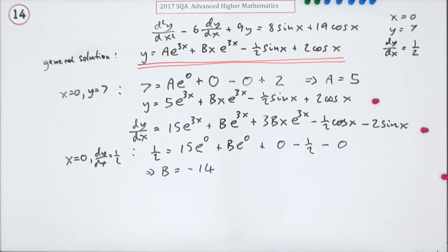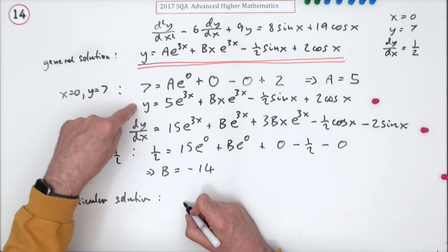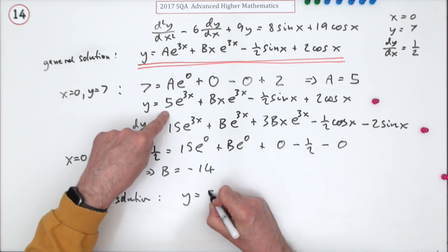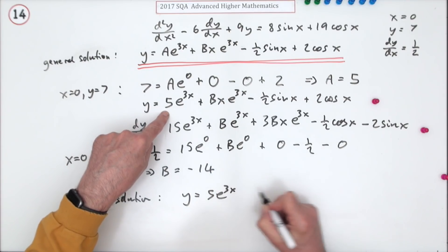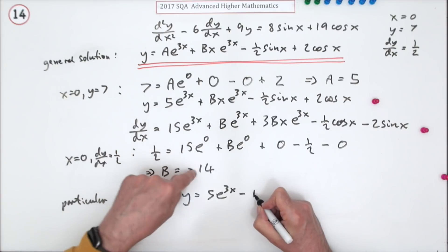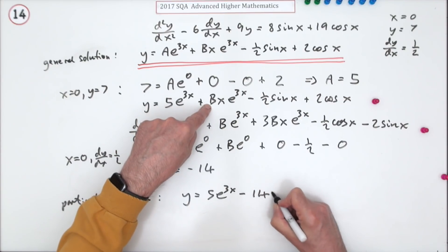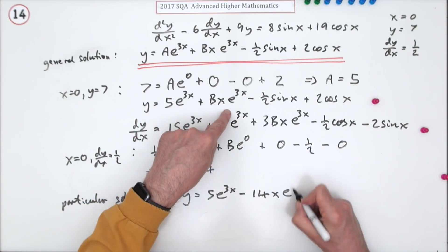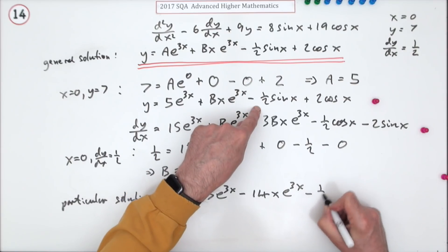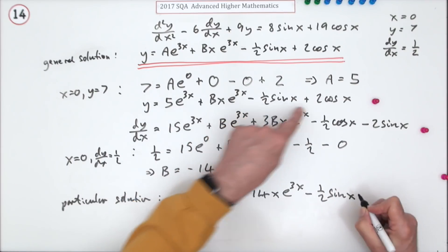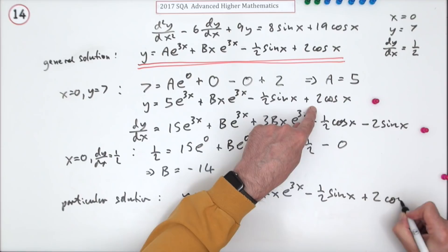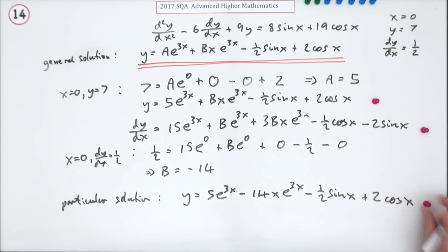So finally, the particular solution will be - back up to this one where was it - y equals 5e^(3x) minus 14xe^(3x) minus a half sin x plus 2 cos x. There we go.